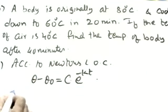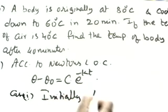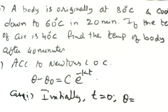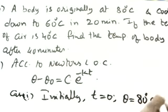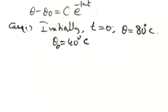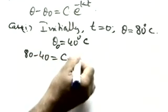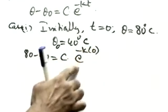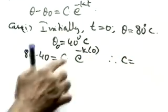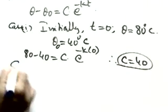According to Newton's law of cooling, θ − θ₀ = C·e^(−kt). Case 1 — initially: t = 0, θ = 80°C, θ₀ = 40°C. Substituting: 80 − 40 = C·e^0 = C. Therefore C = 40.